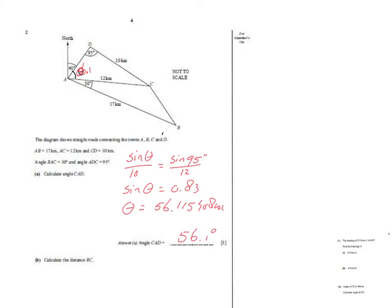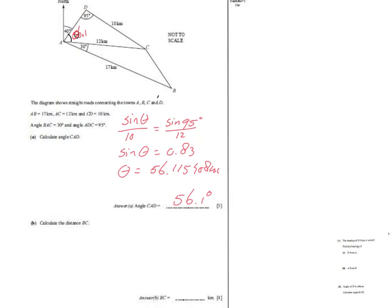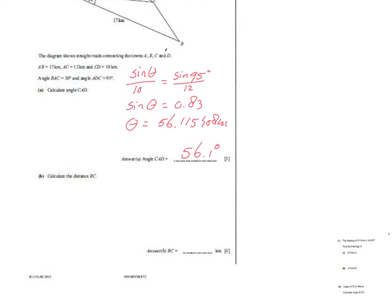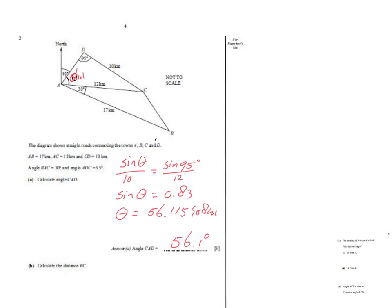Moving on to Part B: calculate the distance BC, worth four marks. I'll label BC as x. This is not a sine rule situation because although I have a teammate angle, I don't have a full team. So for four points, it is the cosine rule.